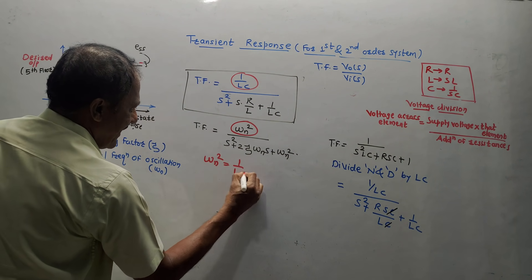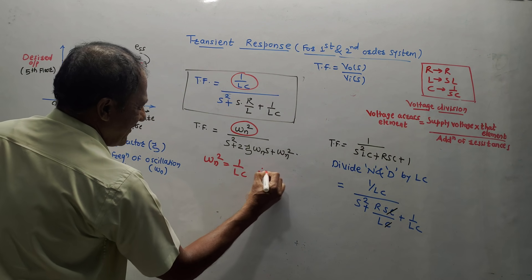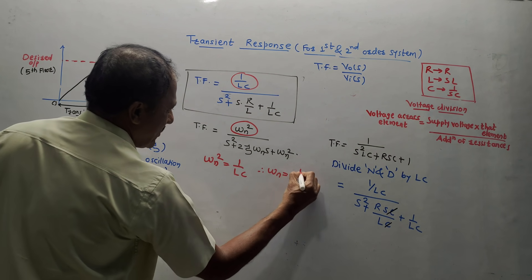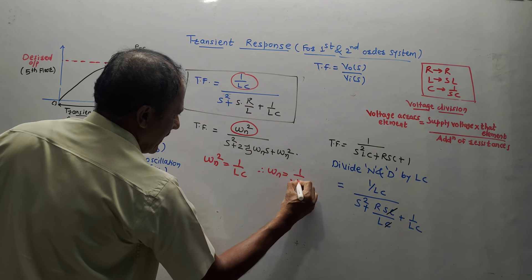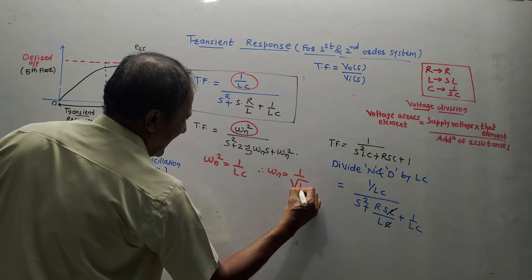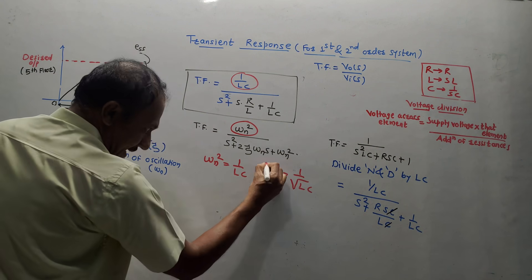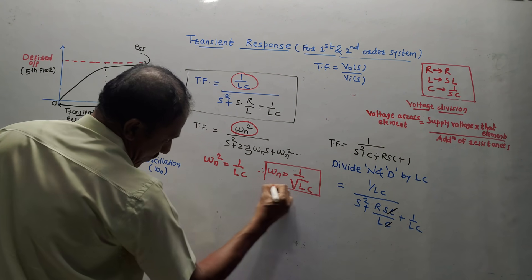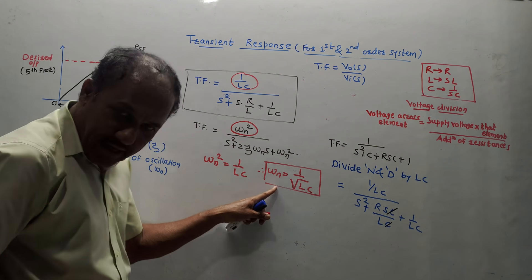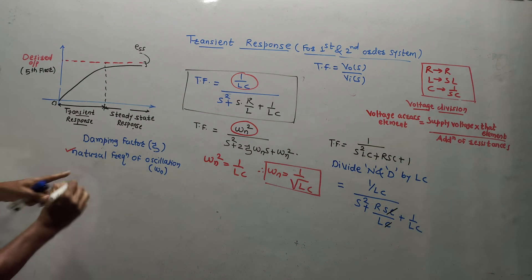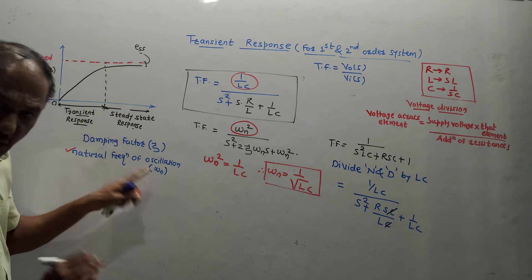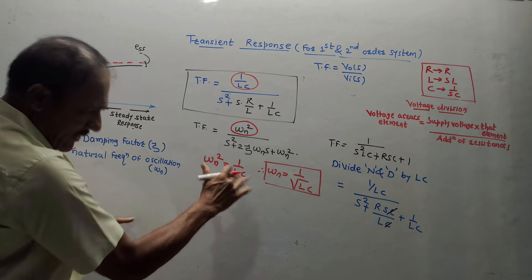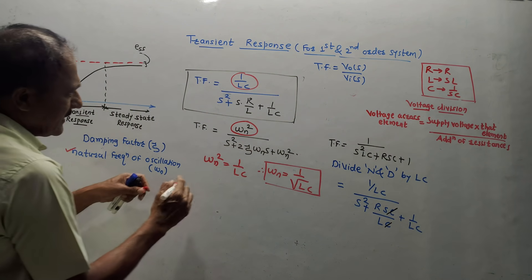Comparing, we get ωn² = 1/LC, therefore ωn = 1/√(LC). This is the equation for ωn, the natural frequency of oscillation.